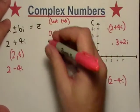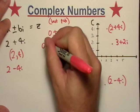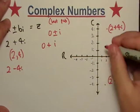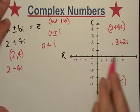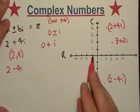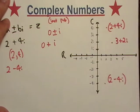So we got 0 plus i. So this is just going to be, we're not going to move on the real axis at all, but we are going to move up one right there.